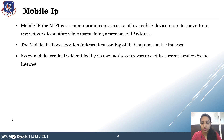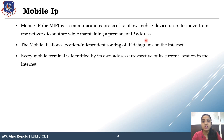Mobile IP is a communication protocol to allow mobile device users to move from one network to another while maintaining a permanent IP address. This permanent IP address is also known as the home IP address. When moving, a second IP address — the care-of address — is also assigned, representing the current point of attachment in the foreign network.